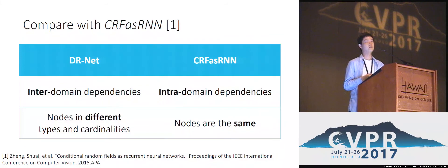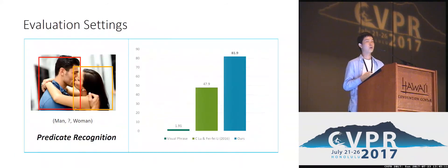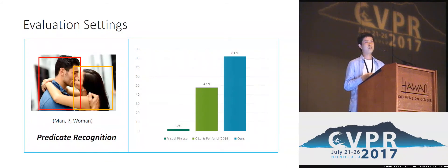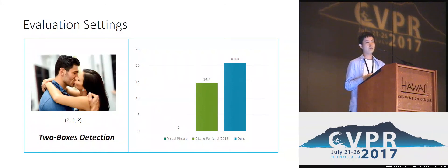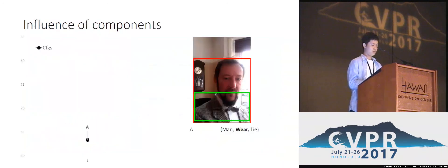We compared our method to multiple state-of-the-art methods, including Visual Phrase, which detects each distinct triplet separately, and Visual Relationship Detection with Language Prior, the previous state-of-the-art published at ECCV 2016. On multiple tasks, our method showed great improvements. Specifically, on the task of predicate recognition, the previous state-of-the-art achieved a recall of around 48, while our method achieved a recall of around 82, a relative gain of around 17%. On union box detection and two-box detection, improvements of six points were also observed.